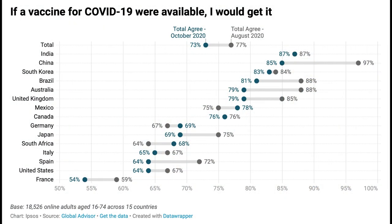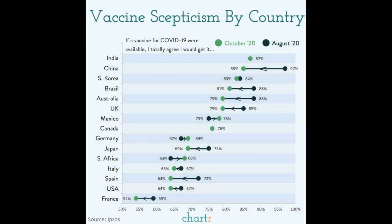Hey friends, I'm Pat Schloss and this is Code Club. If you've been following along in recent episodes, you know I've been working with a dataset generated and published by Ipsos, looking at people's attitudes towards receiving the COVID-19 vaccine. These data were collected in August and October of 2020, so they're a little bit old. What's really interesting to me are the visuals that Ipsos made, as well as another group called Chart R, looking at attitudes towards the COVID-19 vaccine across 15 different countries.